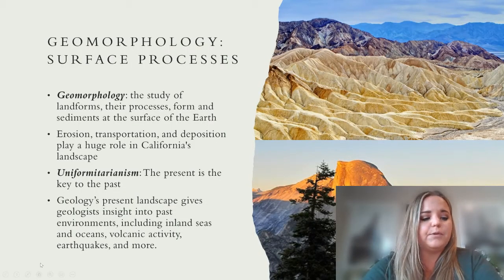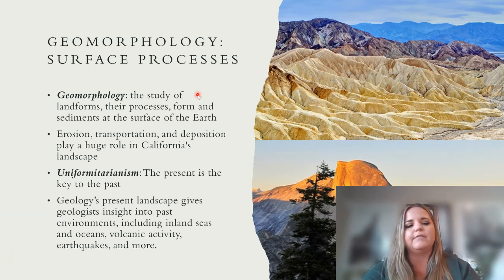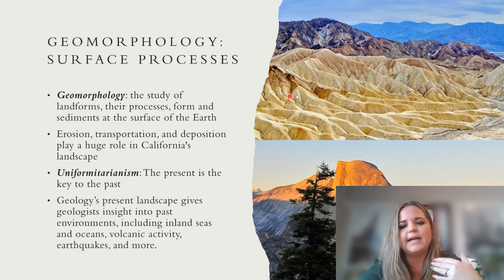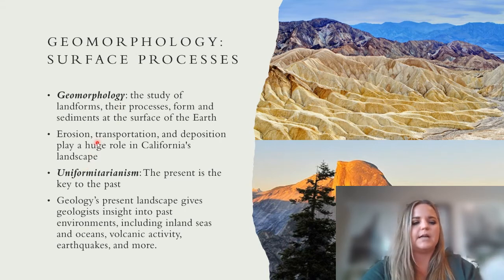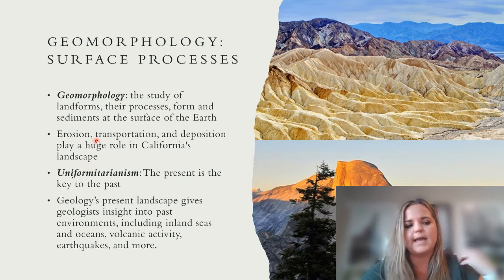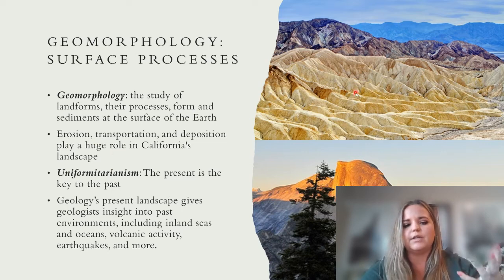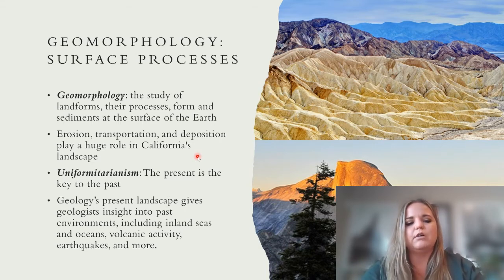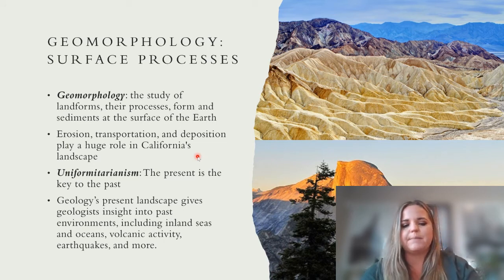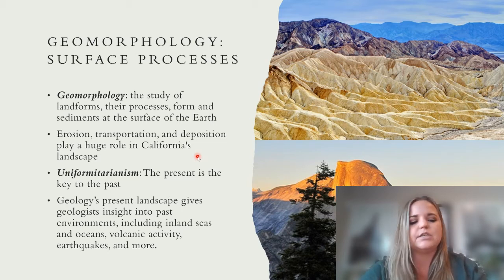Geomorphology is the study of landforms, their processes, and sediments at the surface — anything that shows you the landscape. Most of the surface processes occurring in California's landscape today are erosion, transportation, and deposition, so a lot of what shapes it is sedimentary process. We use uniformitarianism — the present is the key to the past — meaning geology's present landscape gives geologists insight into past environments, including inland seas, oceans, volcanic activity, and earthquakes.